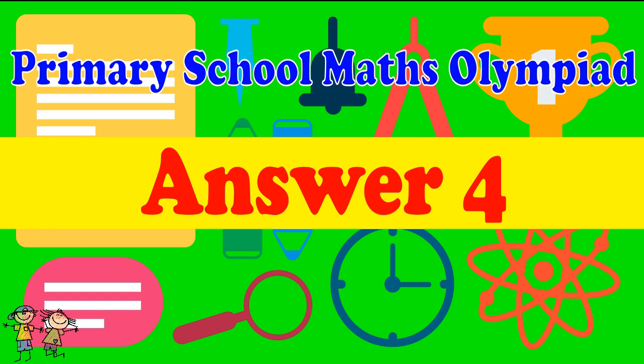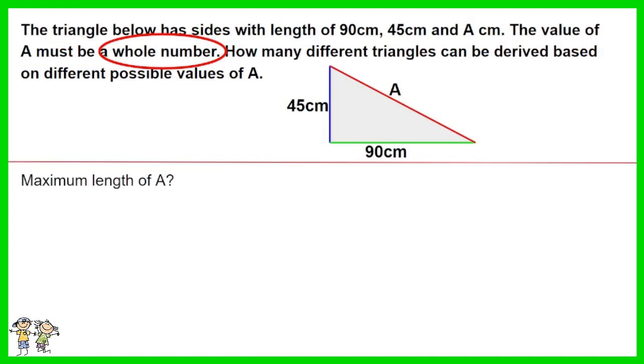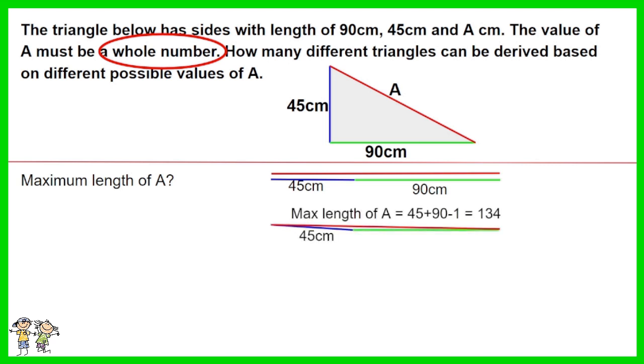Answer for question 4. First, let's find the maximum length of A. Based on the diagram, if we set the maximum length of A to 90 plus 45, which is 135, it will be impossible to form a triangle. As such, the maximum length of A is 90 plus 45 minus 1, which is 134.